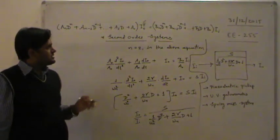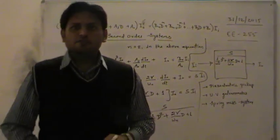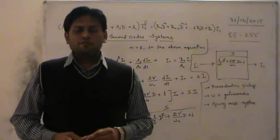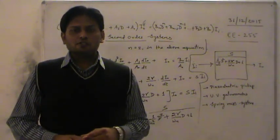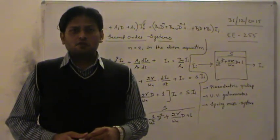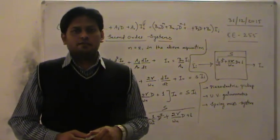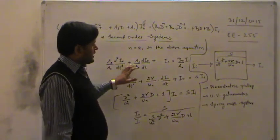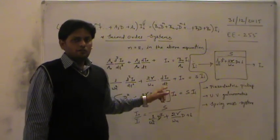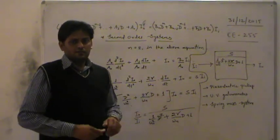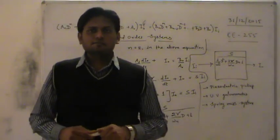In today's lecture, we went through the generalized equation for a measurement system, and from that derived the equations for the zero order system, first order system, and second order system. We also covered examples of each. That's all for today's lecture. Thank you.